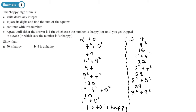Then eight squared plus nine squared gives 64 plus 81, which is 145. Then one squared plus four squared plus five squared — this is going on a bit longer than the last one — gives one plus 16 plus 25, which is 42.